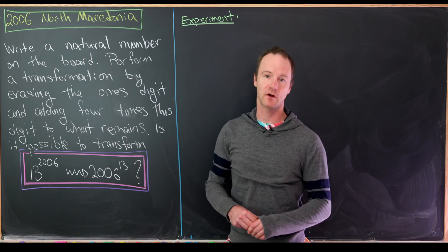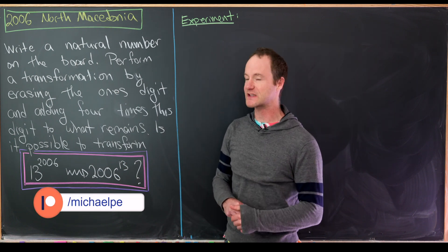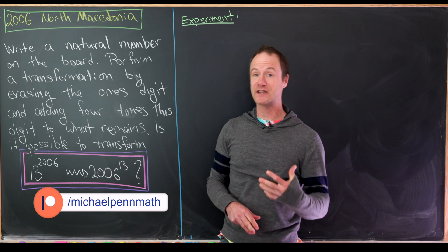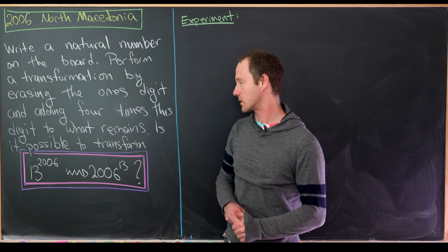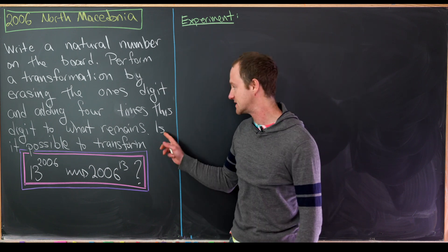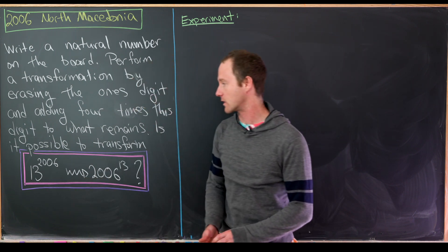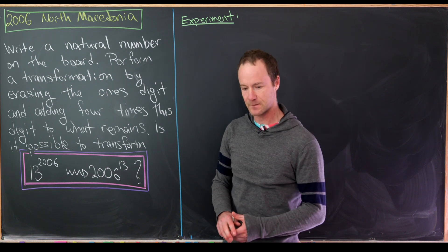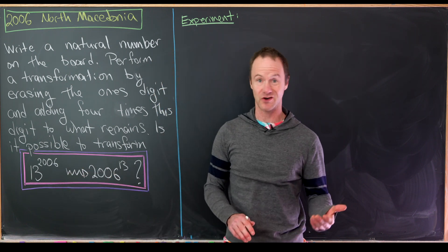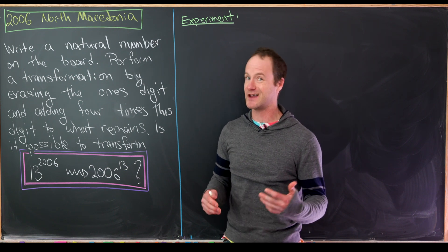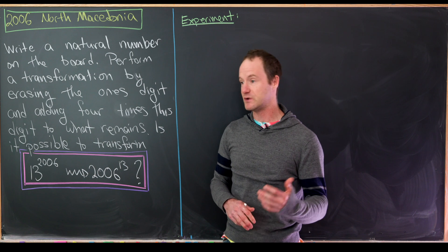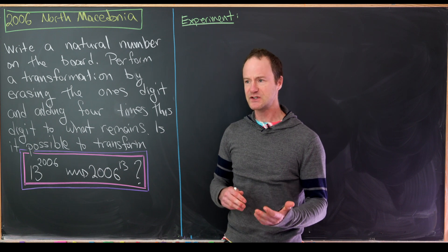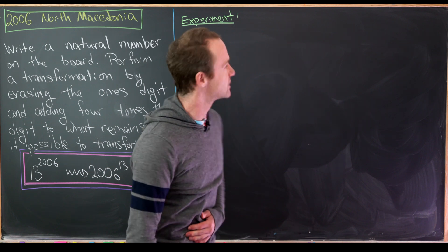We'll start by writing a natural number on the chalkboard and then we perform a transformation as follows. We erase the ones digit and then add four times the ones digit to the remaining number. The question is: is it possible to transform the number 13^2006 into 2006^13? Of course both of these numbers are way too large to really do anything with, so the answer is probably no and we just need to look for a way to show that this is impossible. I think probably the best way is to start with a couple of experiments.